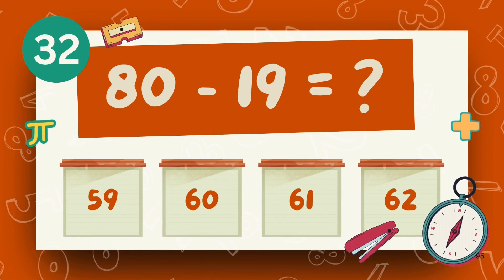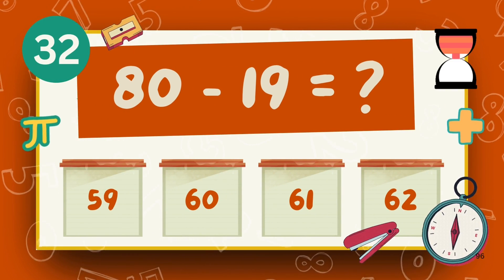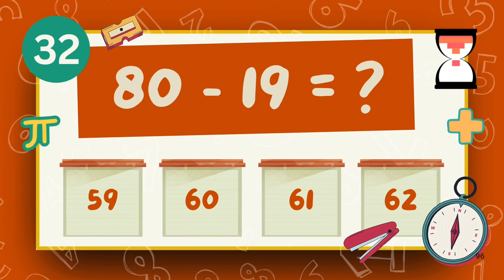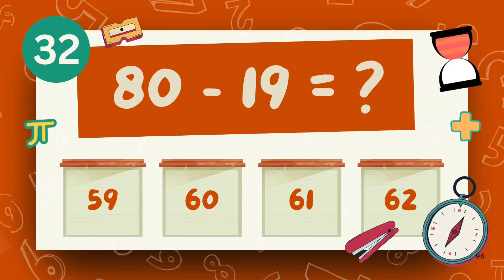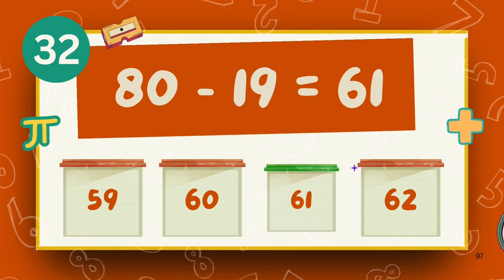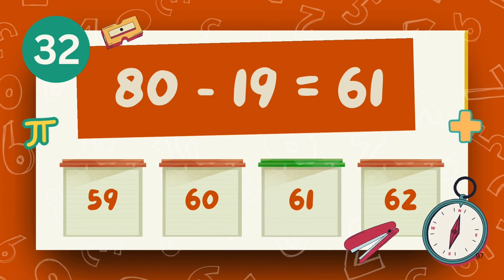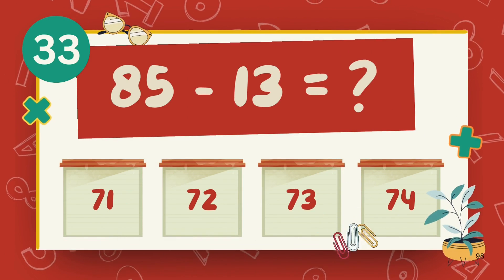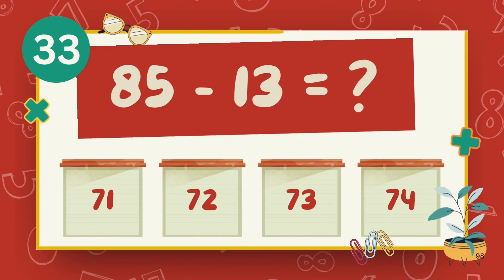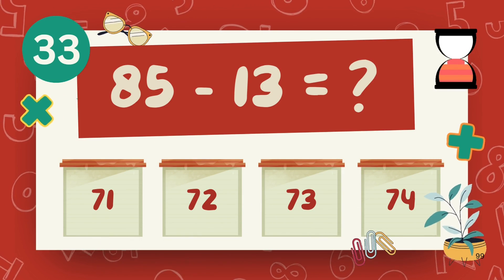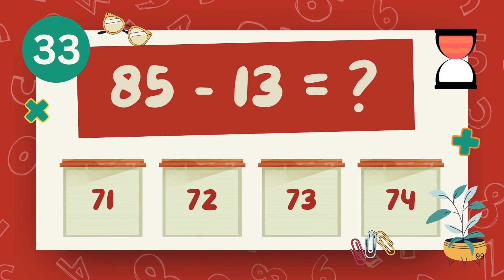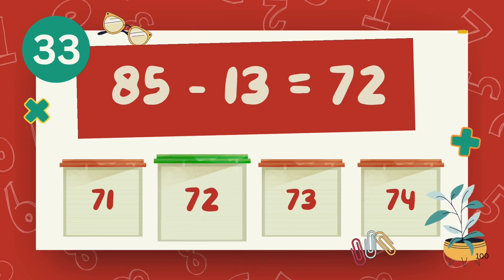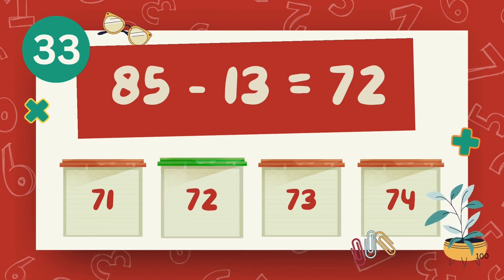What is 80 minus 19? The answer is 62. What is 85 minus 13? The answer is 72.